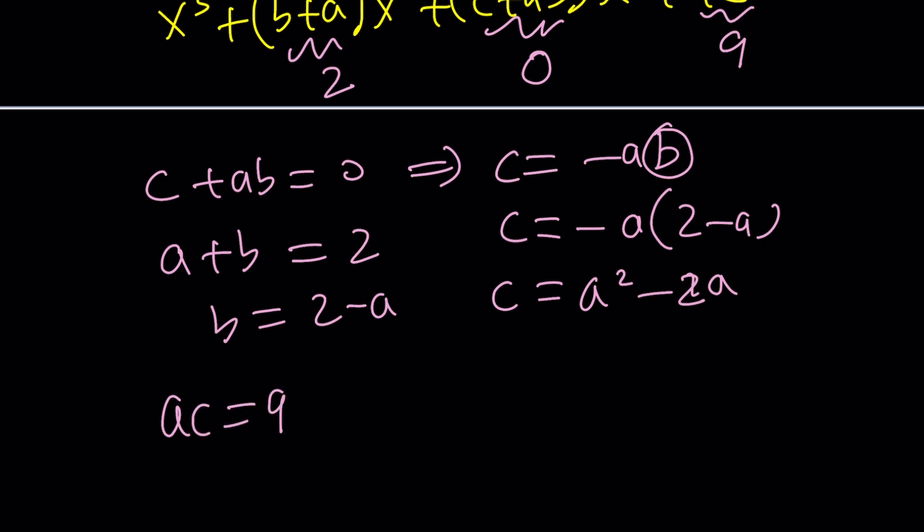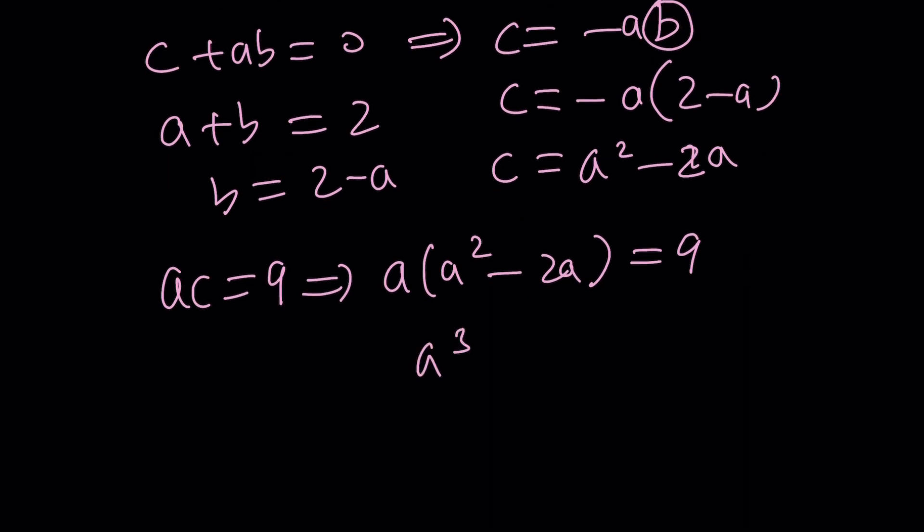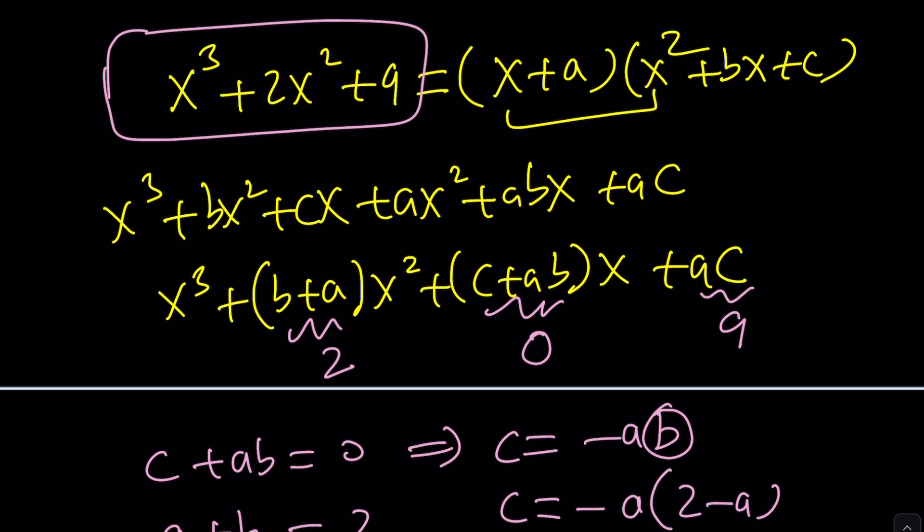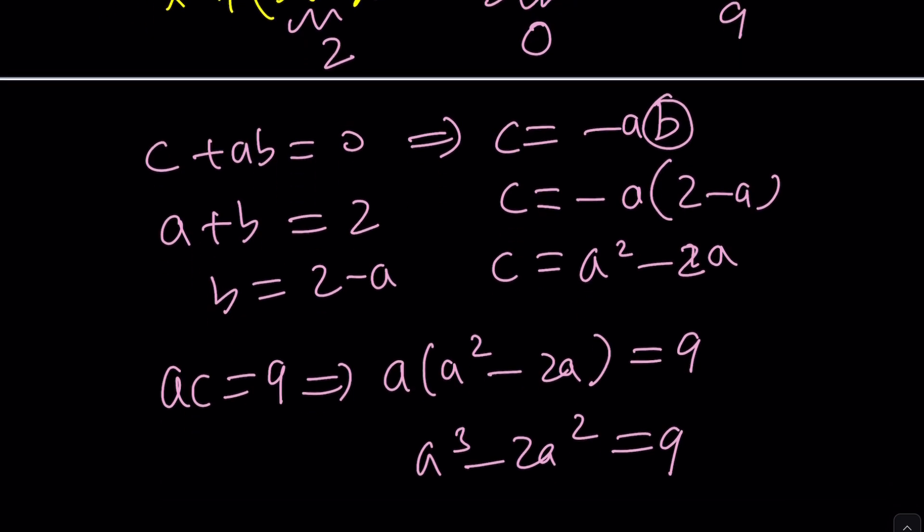ac is 9. So, I can go ahead and replace c with a squared minus 2a. Set it equal to 9. And guess what? This gives us a cubed minus 2a squared equals 9, which is an equation that is very, very similar to the original. So, we didn't really gain anything by doing this, but at least I tried.